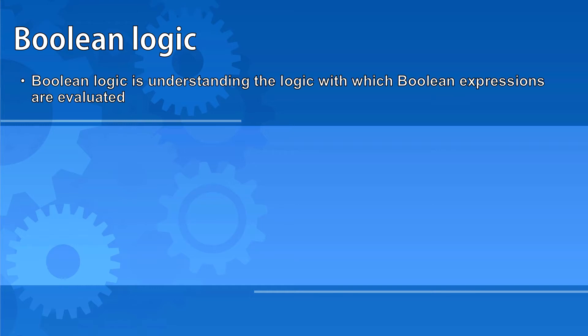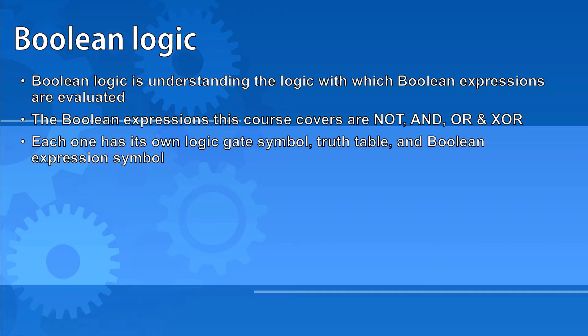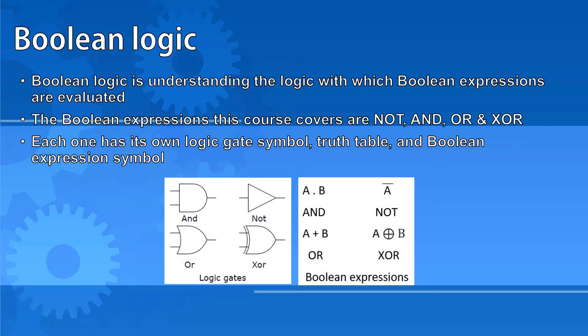Boolean logic is what we use to evaluate Boolean expressions like NOT, AND, OR, and XOR. Each of these Boolean expressions has its own logic gate symbol, truth table, and Boolean expression symbol as we'll look at shortly. Boolean logic is used to design electronic circuits that use the very logic gates that we're going to be examining. This allows electronic devices to make decisions on their own.